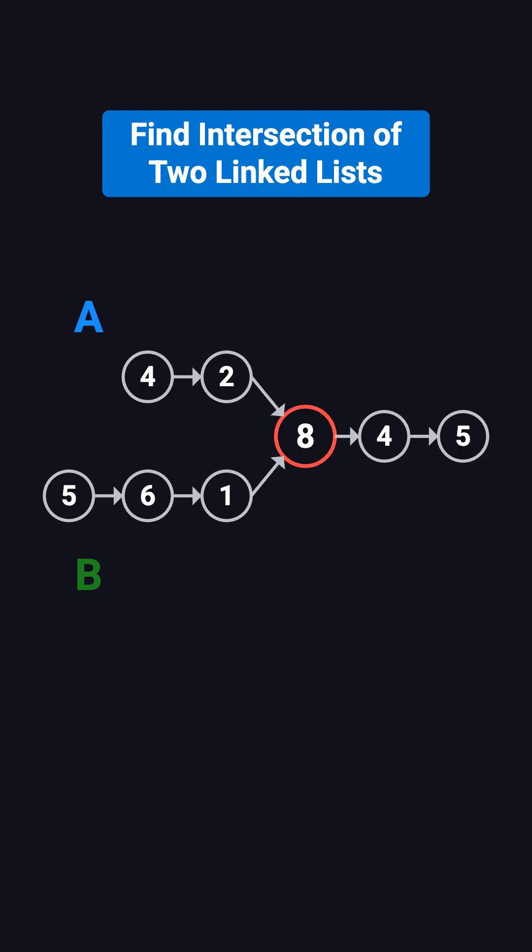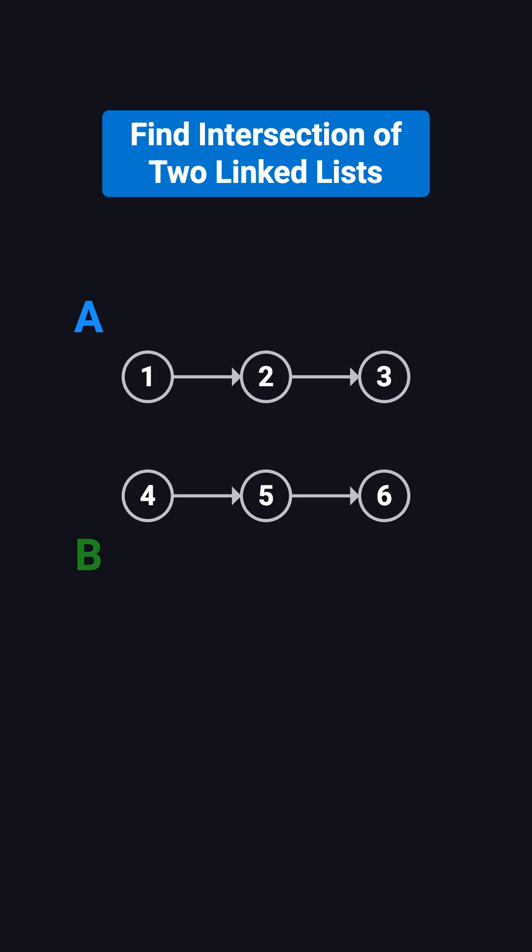These two lists intersect starting at node 8. Another example: if list A is 1, 2, 3, and list B is 4, 5, 6, then there is no intersection.